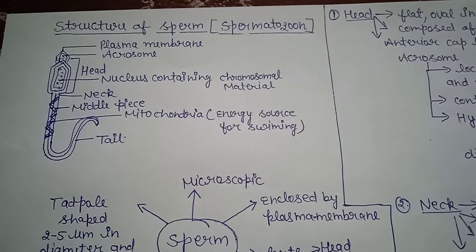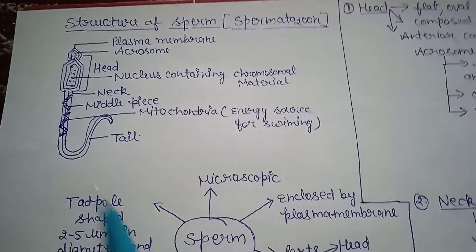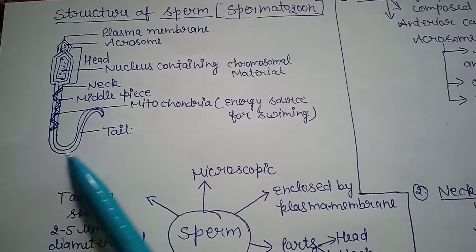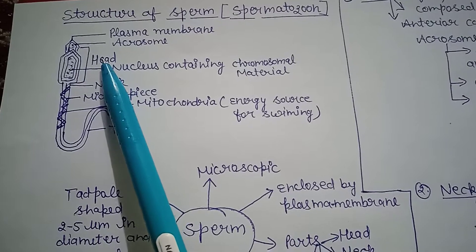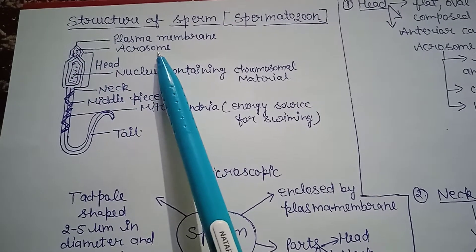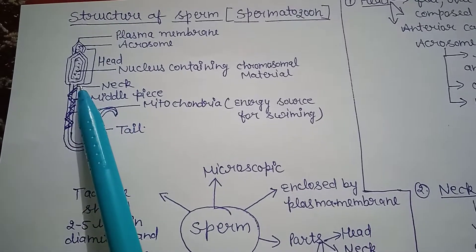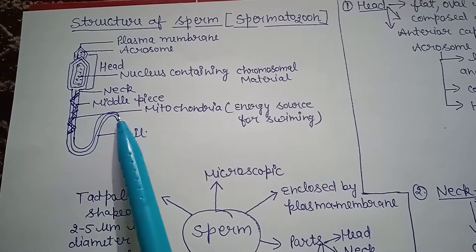Let's start without wasting time. This is the structure of sperm, and you can see in this diagram this particular region is known as the head. The upper side of the head has the acrosome present. This particular region is the neck, this is the middle piece, and this particular region is the tail.